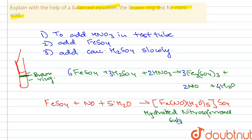So that is the whole brown ring test for a nitric acid solution.